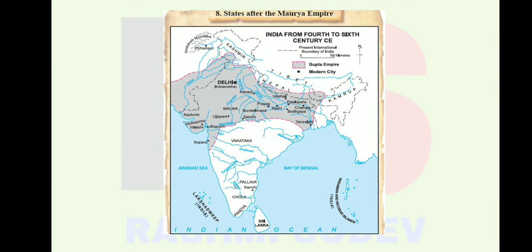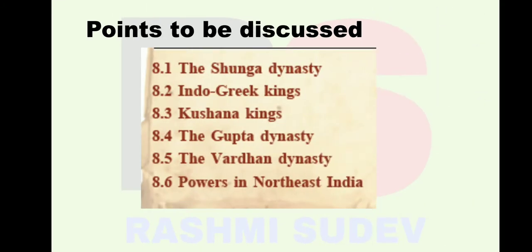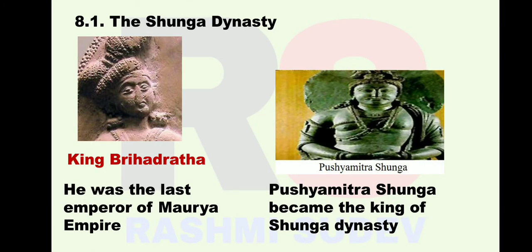History Chapter 8: States after the Maurya Empire. Points to be discussed: 8.1 The Shunga Dynasty, 8.2 Indo-Greek Kings, 8.3 Kushana Kings, 8.4 The Gupta Dynasty, 8.5 The Vardhan Dynasty, 8.6 Powers in Northeast India.